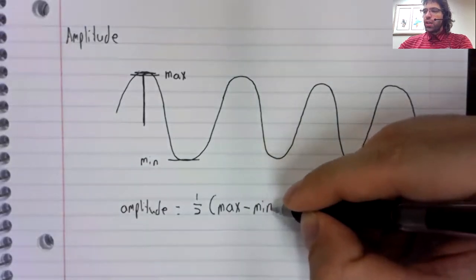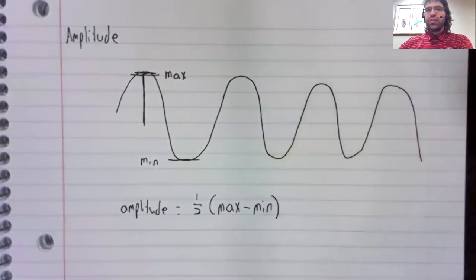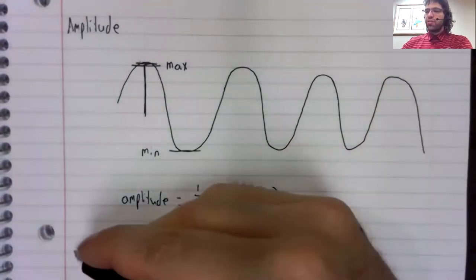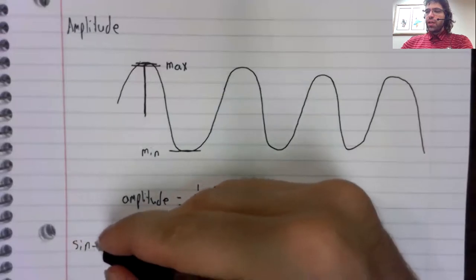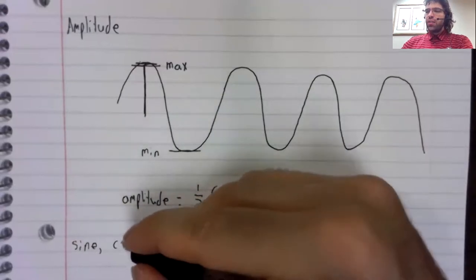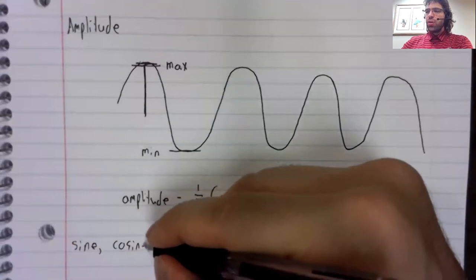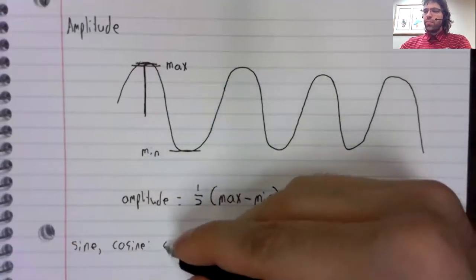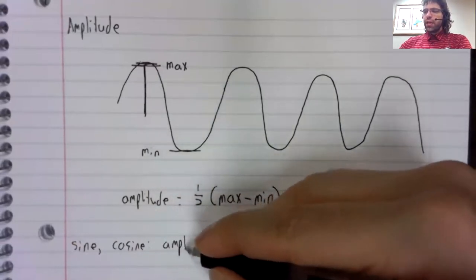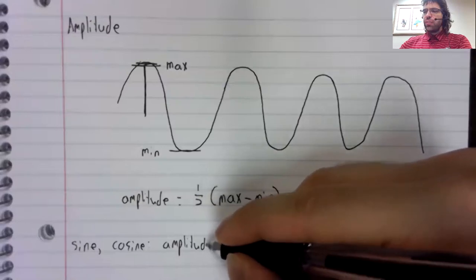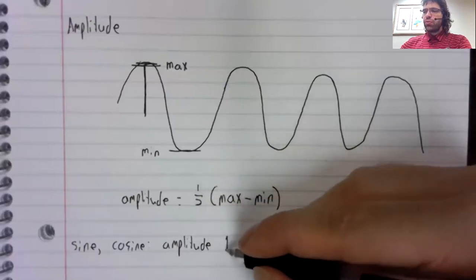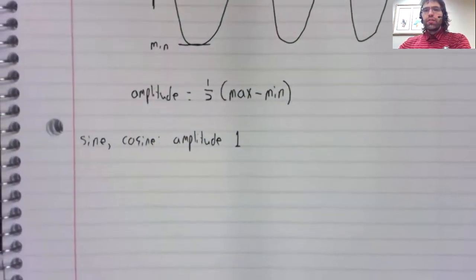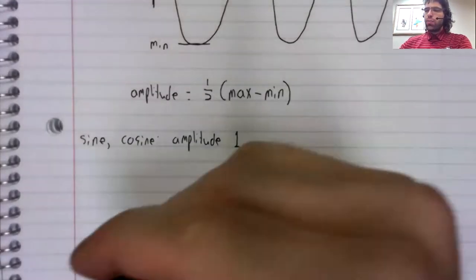The amplitude is given by this formula. And the sine and the cosine have the same amplitudes. Their amplitudes are one.